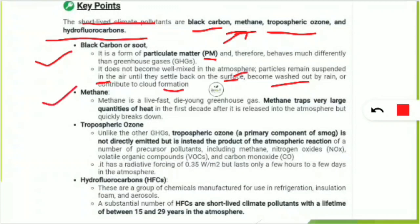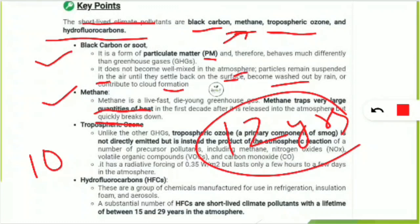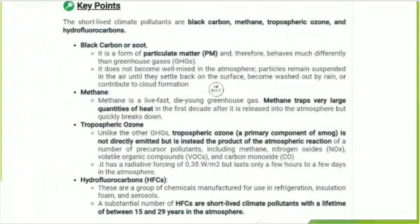Methane (CH₄) is described as a 'live fast, die young' greenhouse gas. It traps very large quantities of heat — its global warming potential is 25 — and in the first decade after it is released into the atmosphere it is most dangerous, contributing greatly to global warming. But its atmospheric lifetime is only 12 years, within which it breaks down, making it a short-lived climate pollutant.